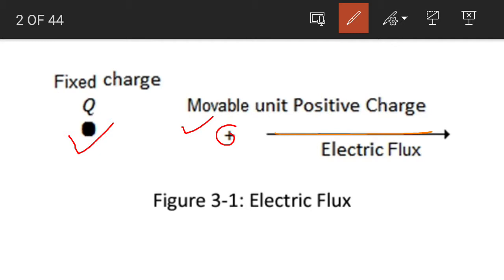If we place the unit positive charge at different positions, it will move along different lines. These are the lines, or paths, which are followed by a unit positive charge in an electric field.